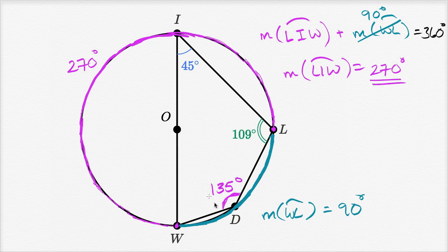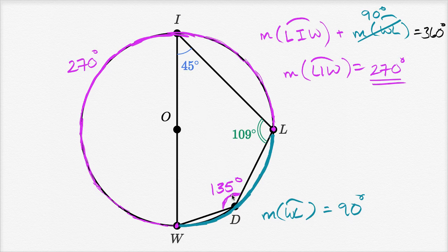You might notice something interesting: 135 degrees plus 45 degrees adds up to 180 degrees. So it looks like, at least for this case, these opposite angles of this inscribed quadrilateral are supplementary. An interesting question is: are they always supplementary? If you have an arbitrary quadrilateral inscribed in a circle — where each vertex sits on the circle — are opposite angles always supplementary, always adding up to 180 degrees? I encourage you to think about and even prove it. The proof is very close to what we just did, but using general numbers — calling the angle x instead of 45, then proving the opposite angle must be 180 minus x.